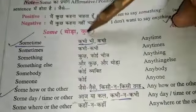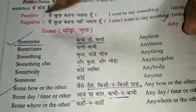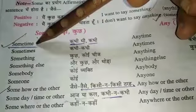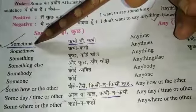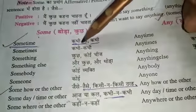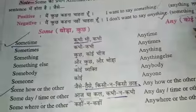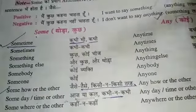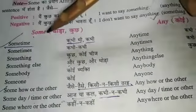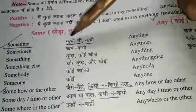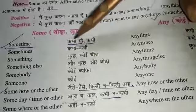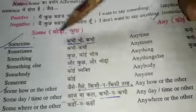Some means thoda kuch. Sometime — you can come sometime. Tum kabhi bhi aa sakti ho. We can see here 'kabhi bhi.'